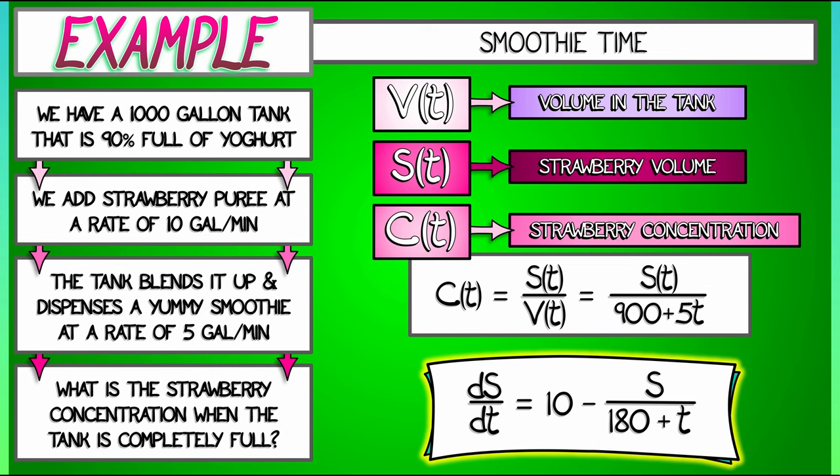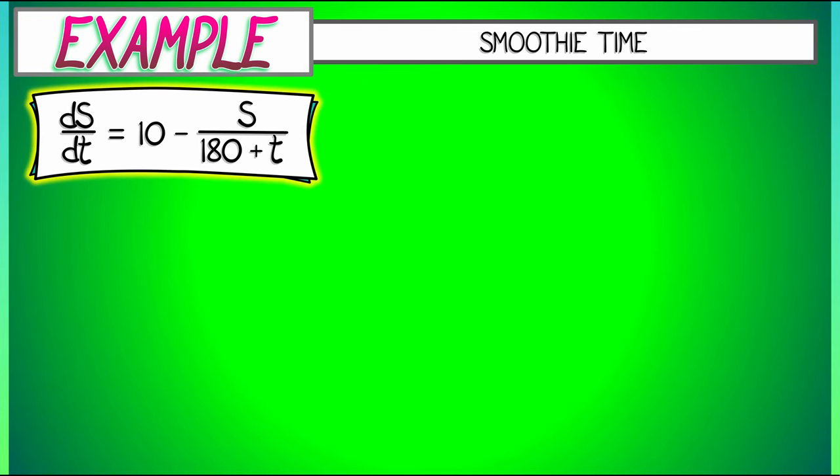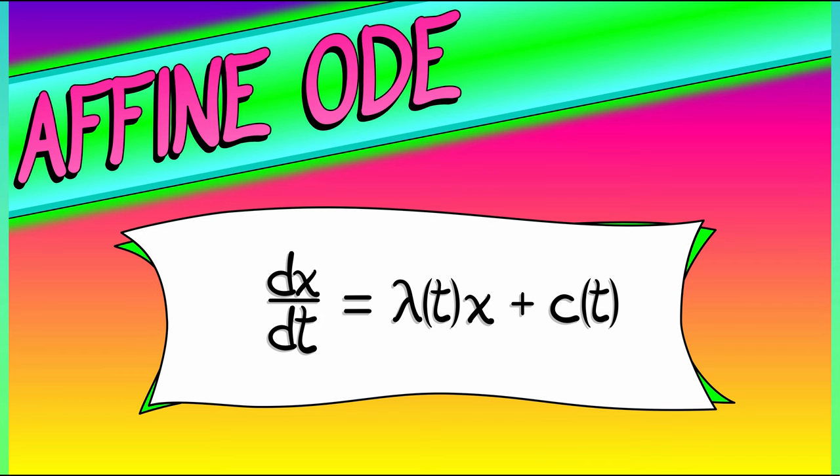Now recall we did some work to arrive at a differential equation for S, namely dS/dt is 10 minus S over (180 plus t). Now take a look at that - this is really an affine ODE. We couldn't solve it through separation and integration, but we can solve it using an integrating factor.